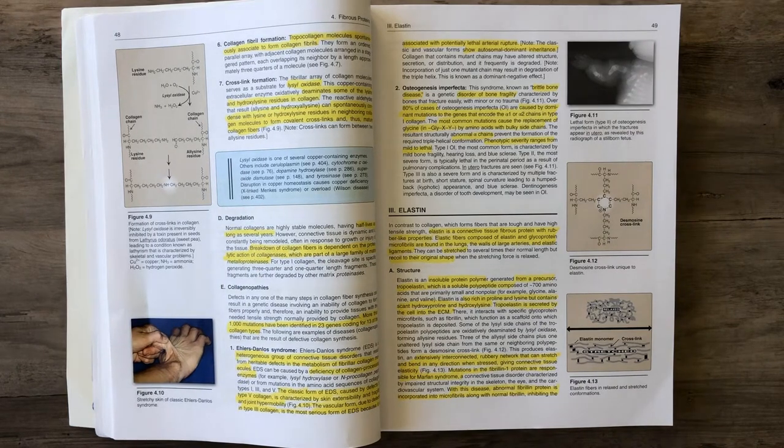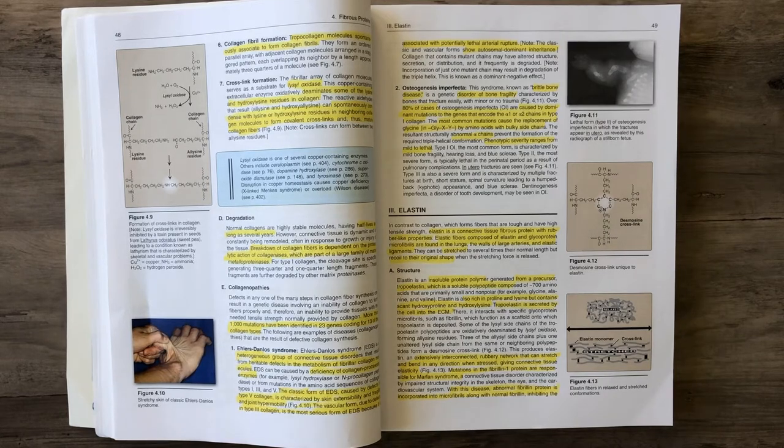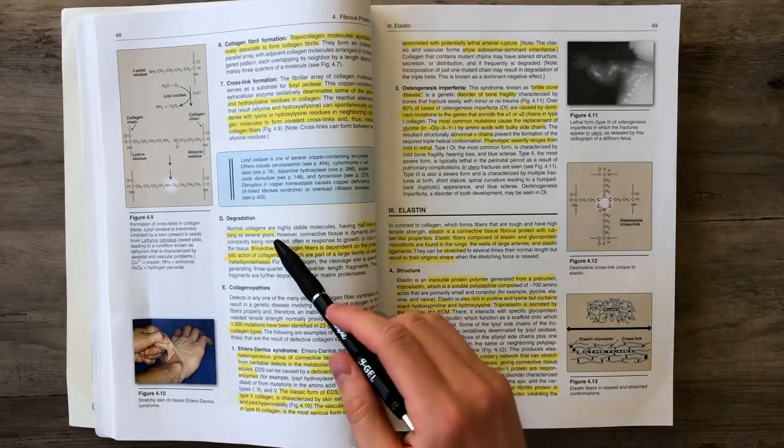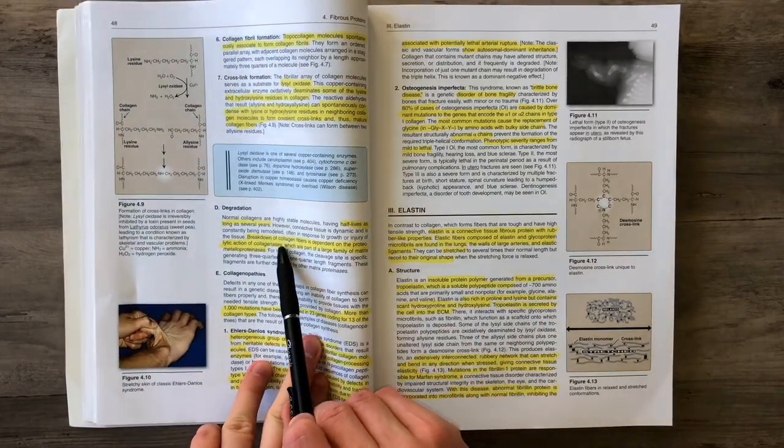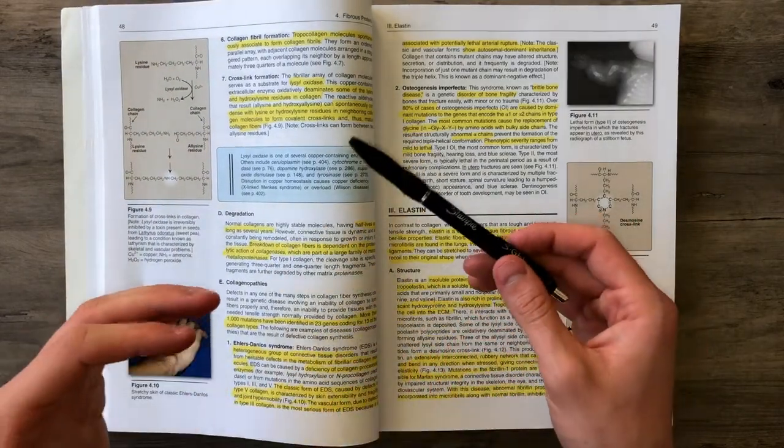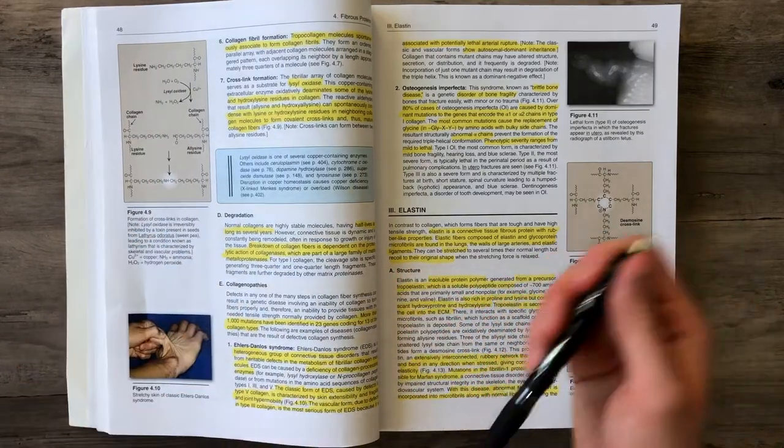When it comes to breaking down collagen, it actually lasts quite a long time. It's a strong molecule with a half-life as long as several years. But it can be broken down by enzymes called collagenases, which are part of the large family of matrix metalloproteinases.